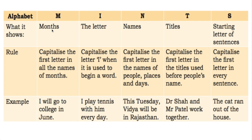M stands for Months, I is for the letter I, N is for Names, T is for Titles, and S is for the Starting letter of sentences. So M means months — whatever month name you write, its first letter will always be a capital letter. These are basic English rules you have to learn.